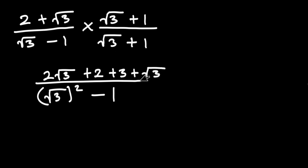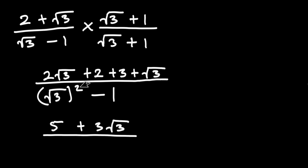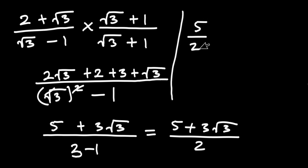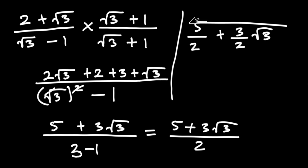Simplifying the numerator: 2 plus 3 is 5, and 2 root 3 plus root 3 is 3 root 3, giving us 5 plus 3 root 3. On the denominator, square root of 3 squared minus 1 squared leaves 3 minus 1 equals 2. So we have 5 plus 3 root 3 all divided by 2. Splitting the fraction gives a final answer of 5 over 2 plus 3 over 2 times root 3.